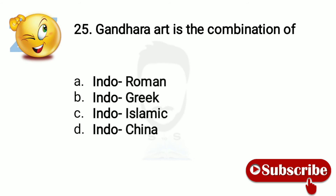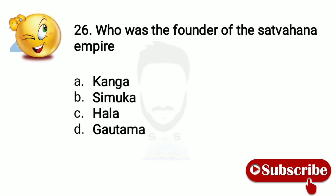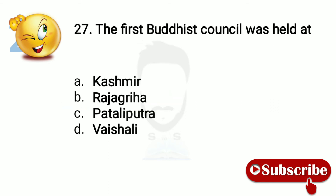Question 24: Gandhara art is the combination of — option number B, Indo-Greek. Question 25: Who was the founder of Satavahana Empire? The answer is Simuka. Question 26: The first Buddhist council was held at — option number B, Rajgriha.